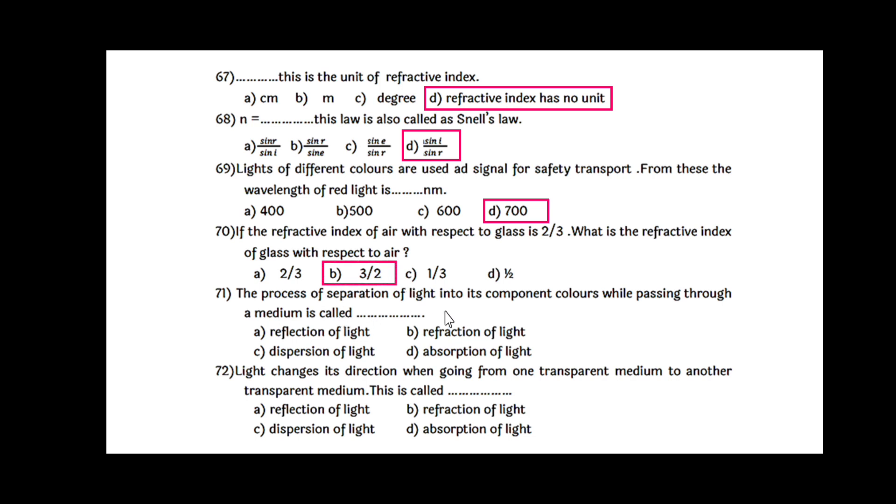The process of separation of light into its constituent colors or component colors while passing through a medium is nothing but dispersion of light. Light changes its direction when it goes from one transparent medium to another transparent medium. This phenomenon is nothing but refraction of light.